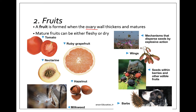Milkweed has wispy little hairs that allow it to be distributed by wind. Nuts will just fall from trees. Things like maize, rice, wheat, and other grasses will be eaten and carried into new locations by animals. Some have sticky barbs — when you come in contact with them they latch on, and a dog, for example, will carry those fruits to a new location. Coconuts are a dry fruit distributed by water because they have air inside, so coconuts can float on the ocean until they reach a new location.